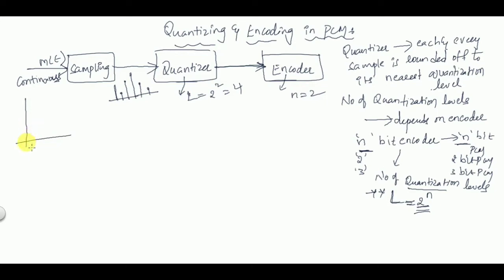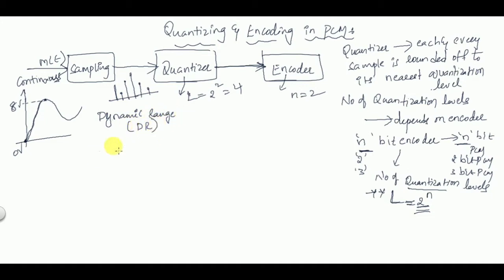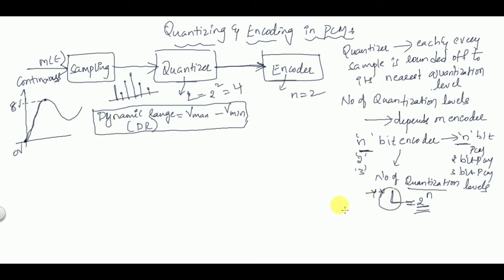Suppose we take an example of m(t) where the maximum value is 8 volts and the minimum value is 0 volts. So the range of m(t) is from 0 to 8 volts, and that range is called the dynamic range. Dynamic range, which we call DR, is equal to V_max minus V_min. The quantization level is L, the encoder is called an n-bit encoder, and hence it is called n-bit PCM.